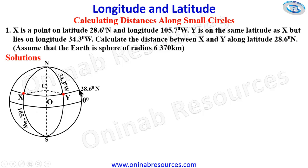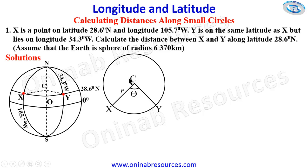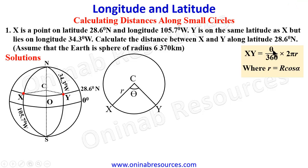We bring out this circle at 28.6 degrees north and get our sector. This is the center C and radius r. C to X is radius, C to Y is also radius. The angular difference gives us theta — this is the arc XY to be calculated. Our formula is: XY equals theta over 360 times 2πr, where r is the small radius, smaller than 6370 kilometers. The small radius r equals R cos(alpha), where R is the full radius of the Earth.